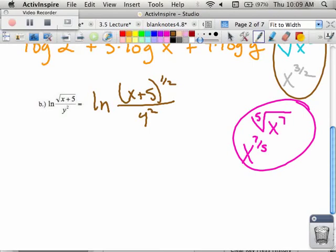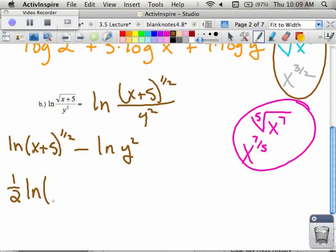Going back to our problem at hand, I notice that there's division so division changes to subtraction. If I rewrite this I get the natural log of parentheses x plus 5 to the 1 half power minus the natural log of y squared. Am I done? No, there are powers so I take care of those so that goes to multiplication. So now I have 1 half times the natural log of x plus 5 minus 2 times the natural log of y, and there's my final answer. So I change division into subtraction, I change power into multiplication.